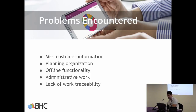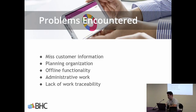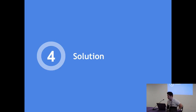Fourth, each plumber has to write on a paper sheet about what was done during the intervention: how much time was spent for travel, for the work, and which products were used. Then at the office, all this information must be re-entered into an Excel sheet. Finally, it is really complicated to know exactly what has been done for a customer because the paper sheet is the only proof of work done — resulting in a lack of work traceability.